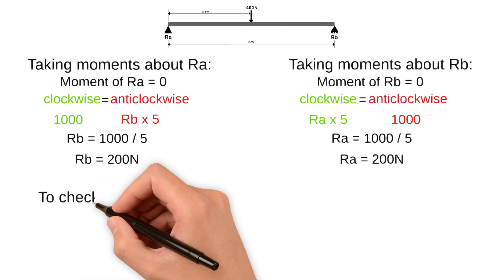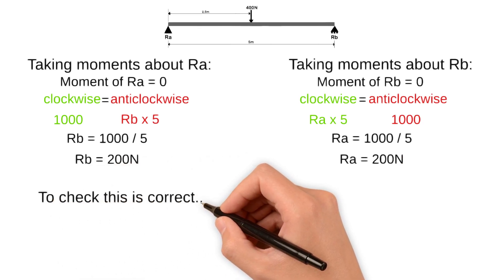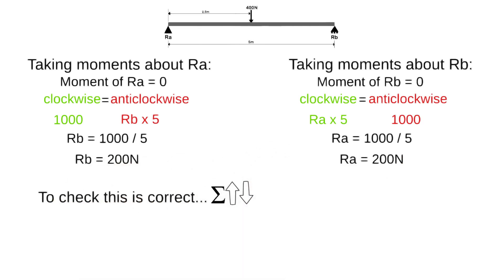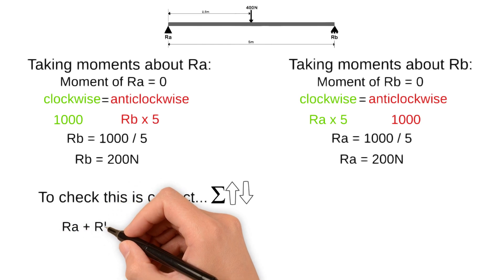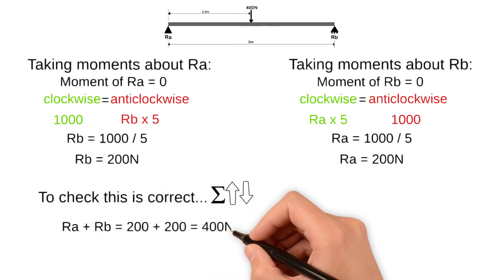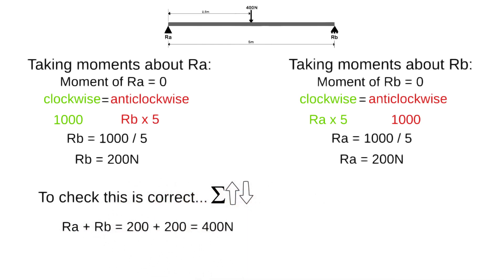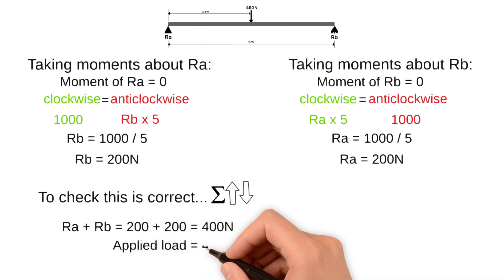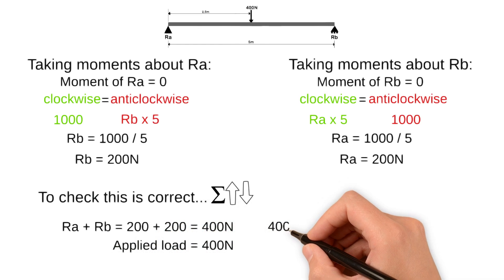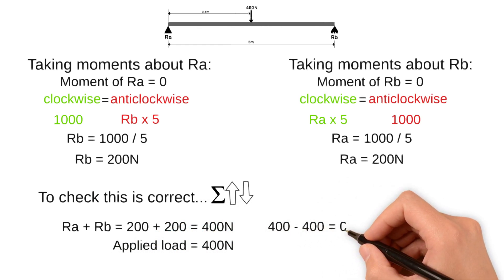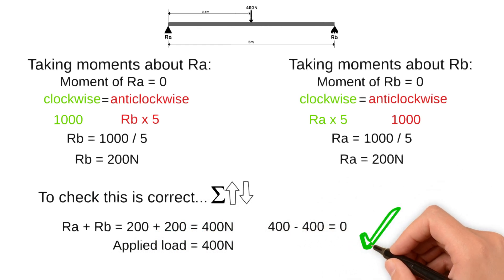To check our calculation we can sum the vertical forces up and down. The sum of the upward forces RA plus RB is 200 plus 200 which equals 400 newtons, and the sum of the downward forces is the applied load which is 400 newtons. Since the sum of the upward and downward forces cancel out to zero our calculation is correct.